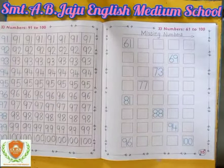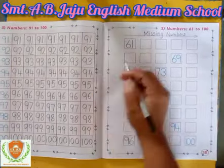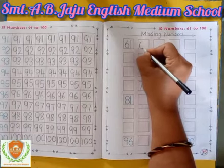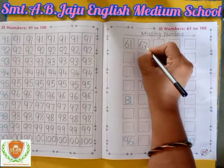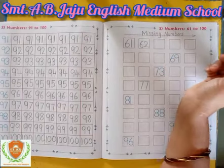So we will start. This is number 61. After 61, which number comes, student? Do you know? Yes — write down 6, then write down 2. 62.